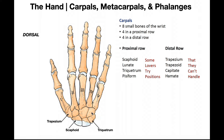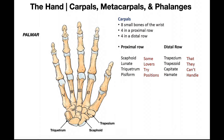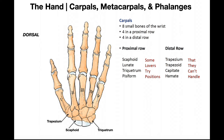Also, you cannot see the hook of the hamate on the dorsal side either. So really, the hook of the hamate and the pisiform are only visible on the palmar surface. 'Some lovers try positions that they can't handle.' When you're looking at these and learning them, remember: as we go across the rows, we always go back and start at the thumb side.